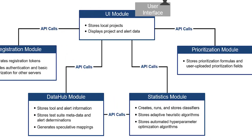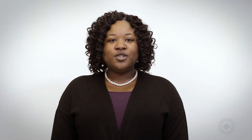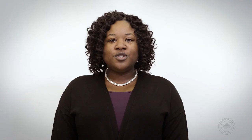The SCAIFE prototype is intended to be used by developers and analysts who manually audit alerts. SCAIFE provides automatic alert classification using machine learning, which gives a level of confidence that the alert is true or false.